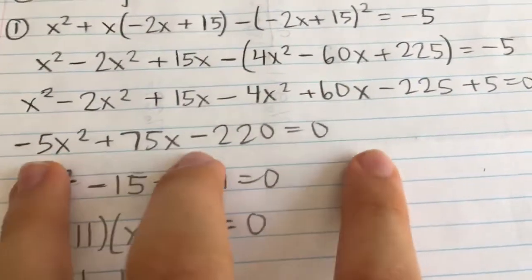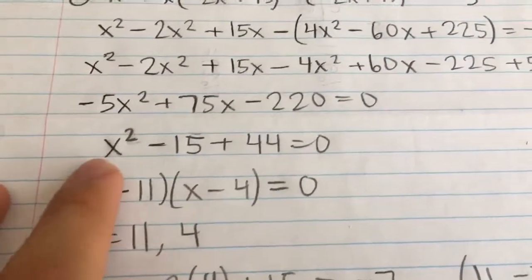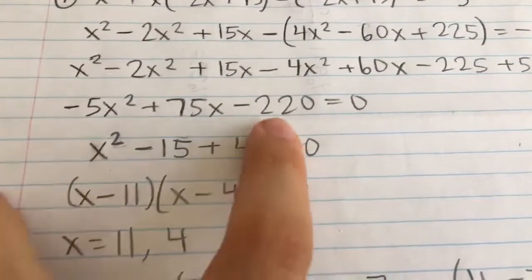I divided all three terms by negative 5. In other words, I divided both sides of the equation by negative 5, but the right is just 0. So 0 divided by negative 5 is still 0, and so I ended up with this.